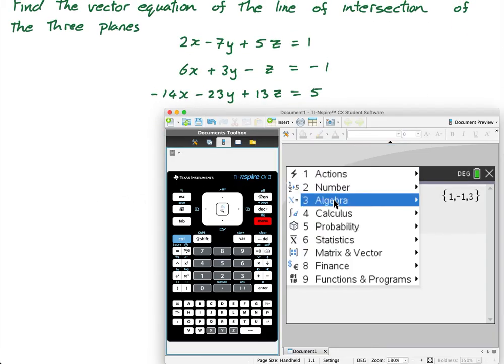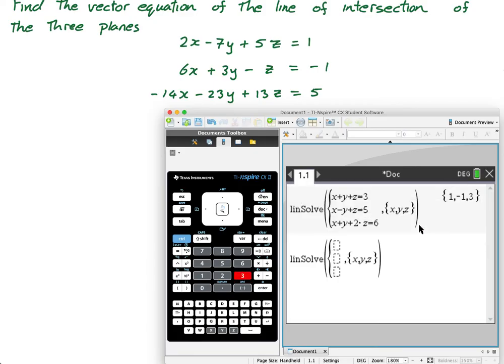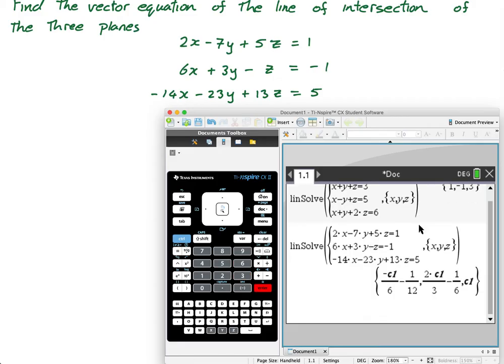So I do menu algebra solve system of linear equations, three equations. And then again, just type it in. Two X minus seven Y plus five Z equals one. Six X plus three Y minus Z equals negative one. Negative 14 X minus 23 Y plus 13 Z equals five. Press enter. And I get this.